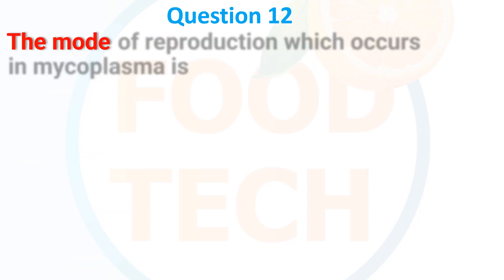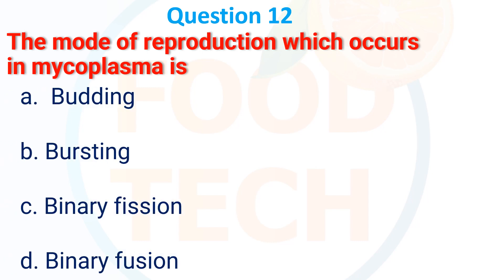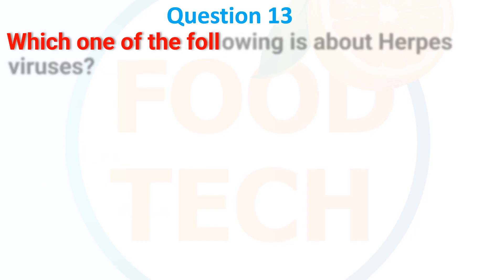The mode of reproduction which occurs in Mycoplasma is: A. Budding, B. Frosting, C. Binary fission. The answer is C: Binary fission.